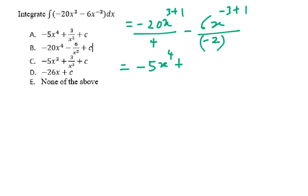Simplifying 6 and 2 will give you 3x to the power of negative 2 plus c. You can write it as negative 5x to the power of 4 plus 3 over x to the power of 2 plus c. Hence, your answer for this question will be A.